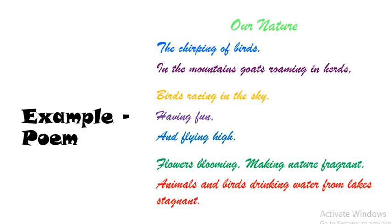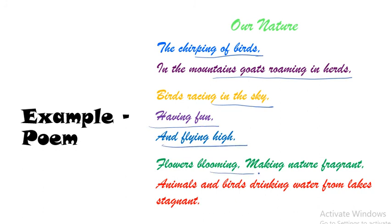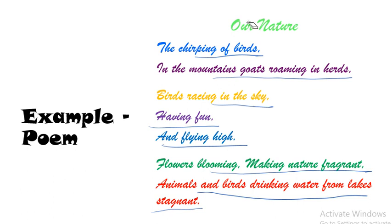Now let's see an example poem on nature. 'The chirping of birds in the mountains, birds roaming in herds, birds racing in the sky, having fun and flying high, flowers blooming, making nature fragrant, animals and birds drinking water from the lake stagnant.' This is a beautiful poem and it is also represented very colorfully. That's how you can represent the poem and that's how you can write a poem.